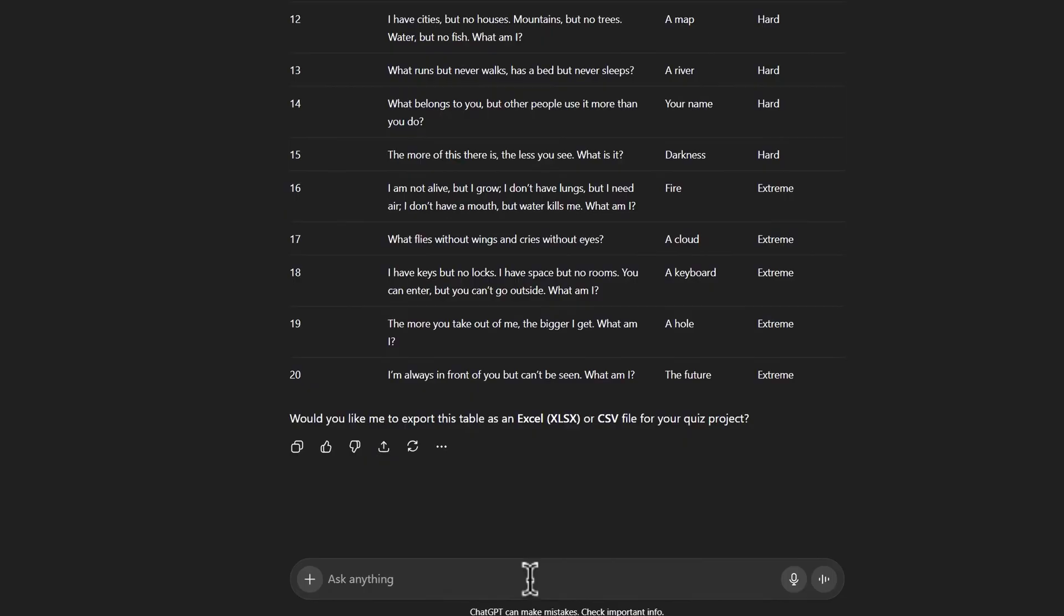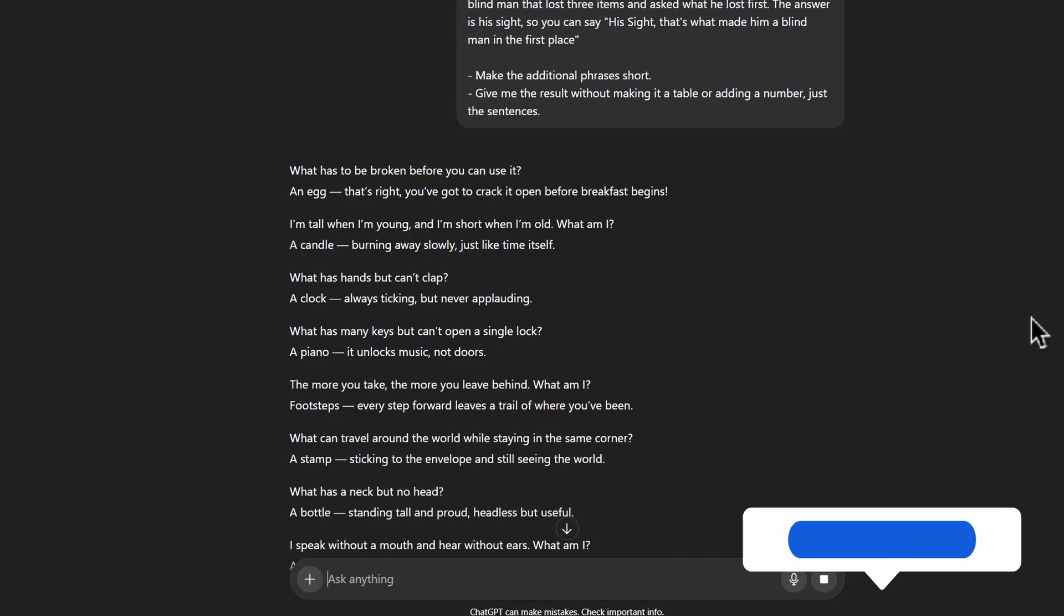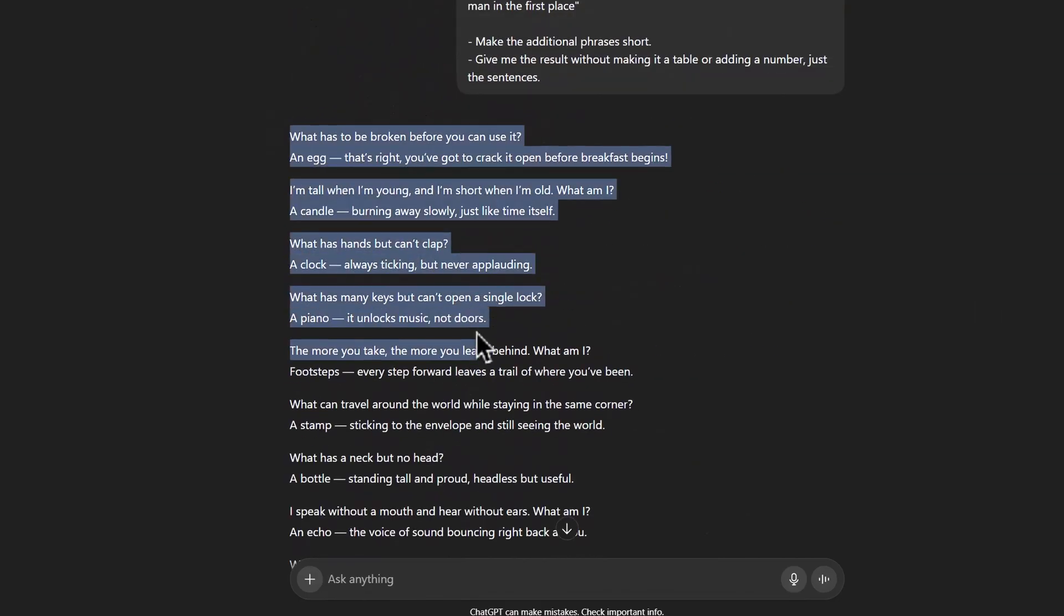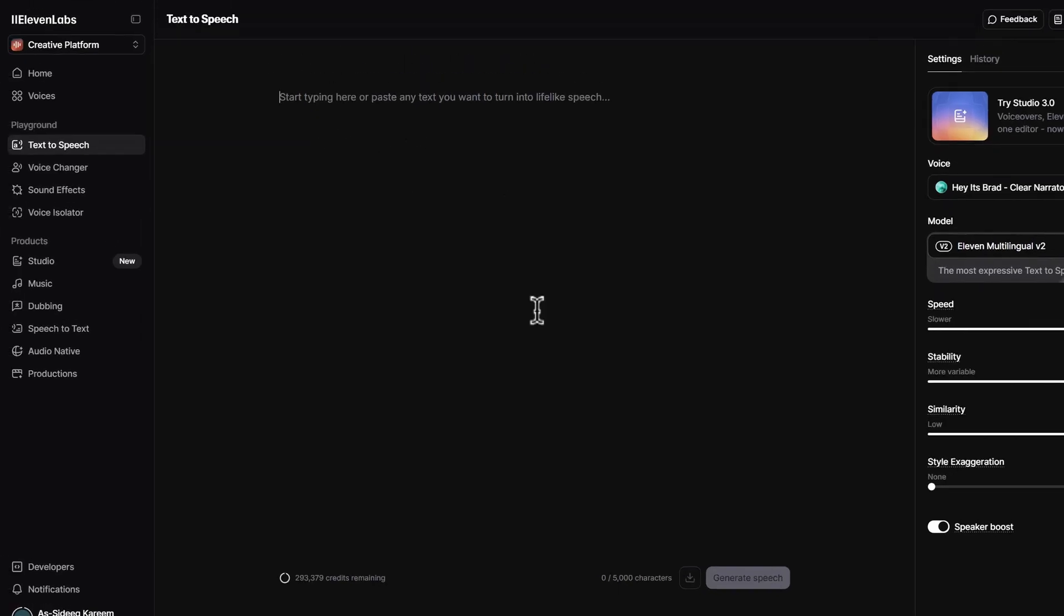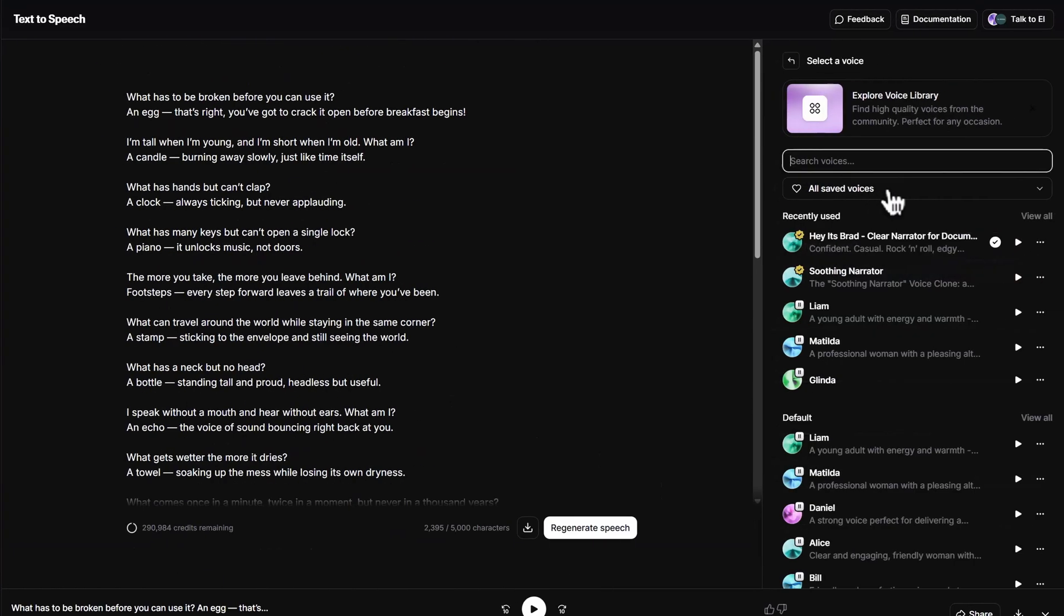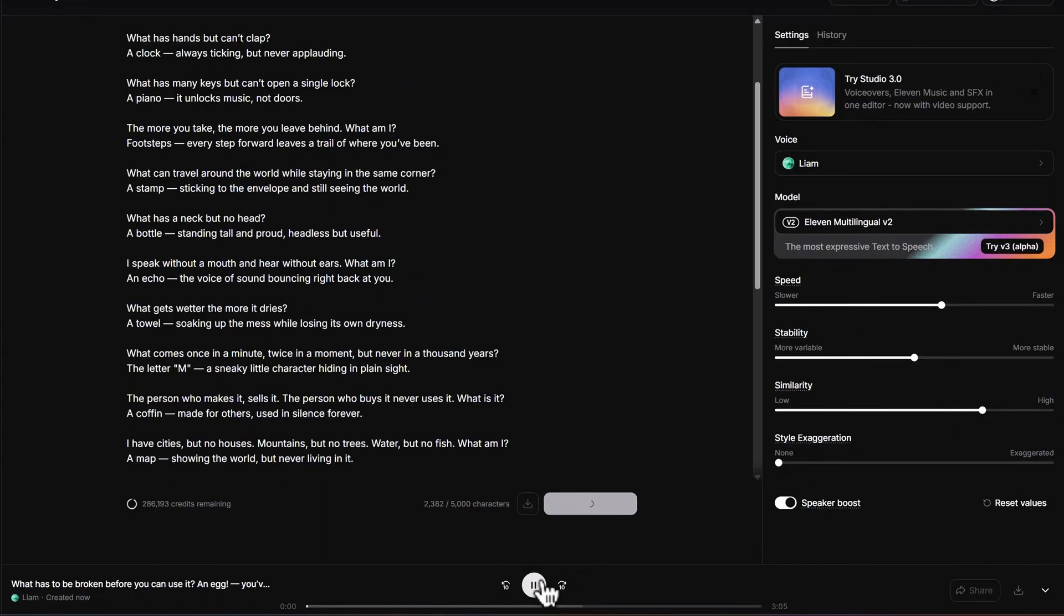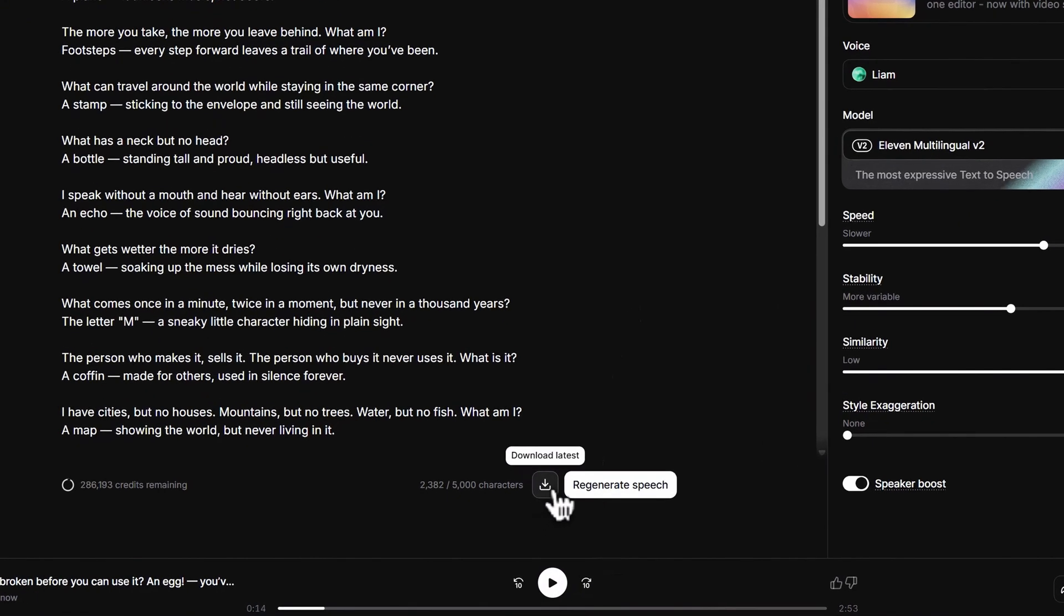The next step is the voiceover. So give ChatGPT another prompt like this. I will also leave this prompt in the description below for you to copy and use. When it's done, highlight all the text and copy them. Go to Eleven Labs and paste it there. Choose a voice you like to use, and I will go for Liam here. Click on Generate, and listen to it. It sounds good, so download it to your computer as an MP3 file.